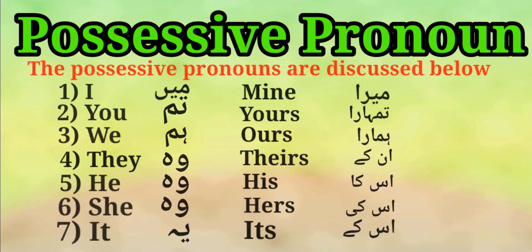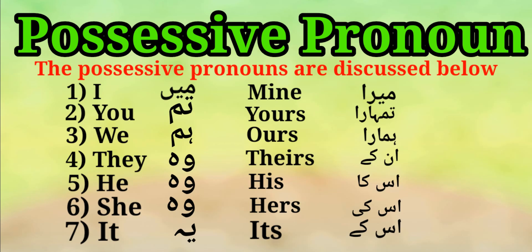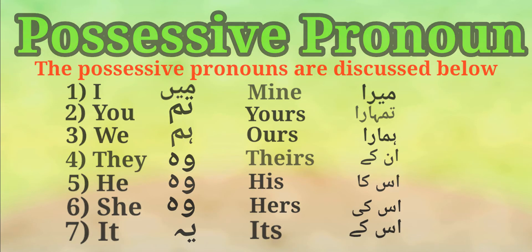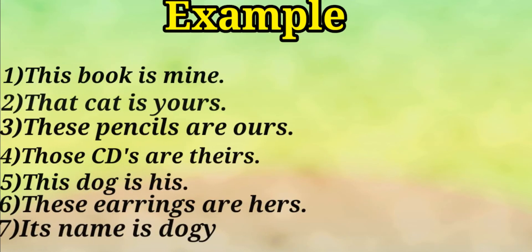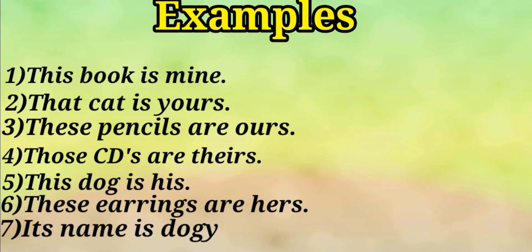The possessive pronouns are discussed below. Number one: I - mine. Number two: you - yours. Number three: we - ours. Number four: they - theirs. Number five: he - his. Number six: she - hers. Number seven: it - its.